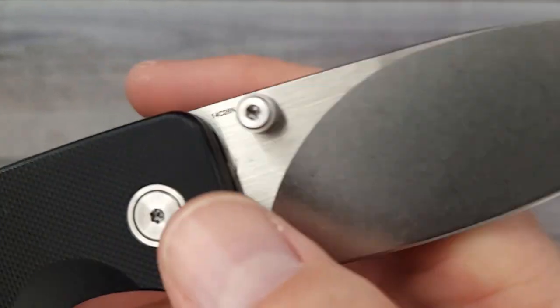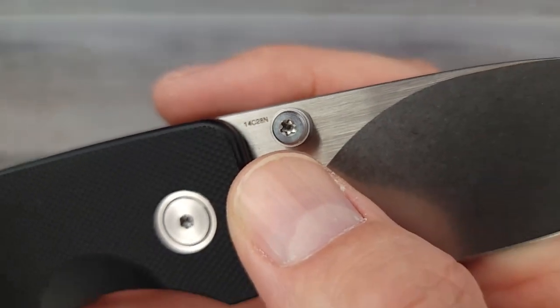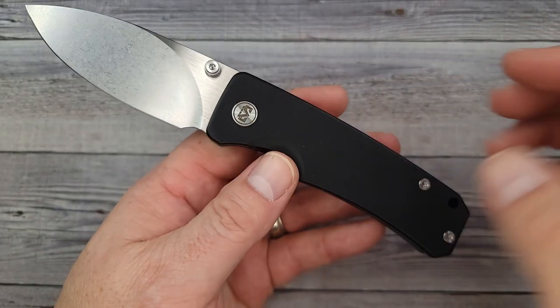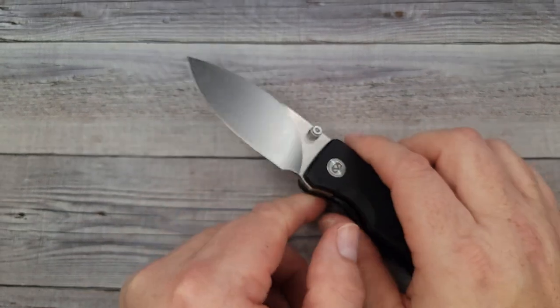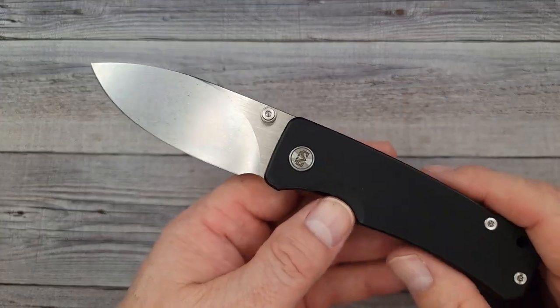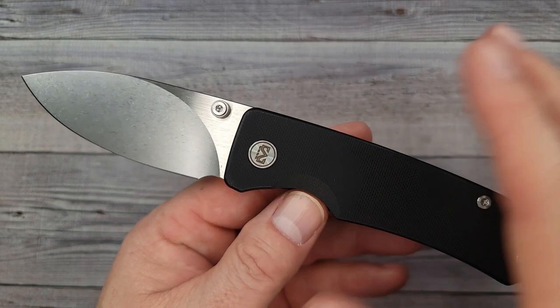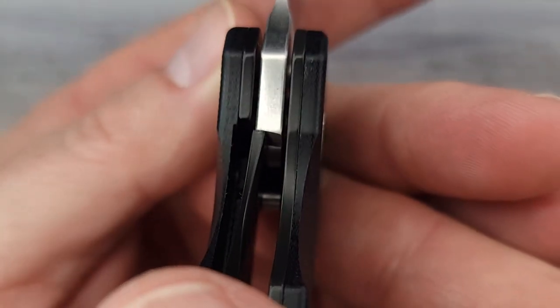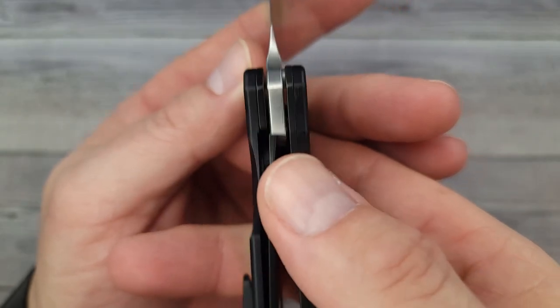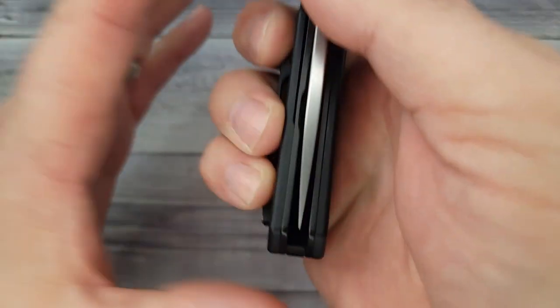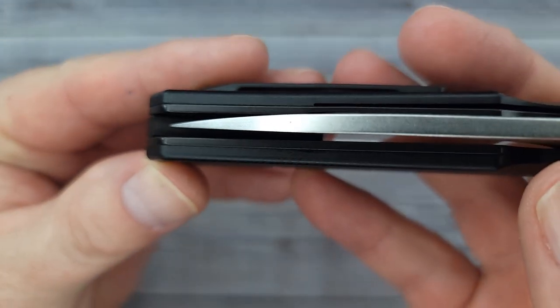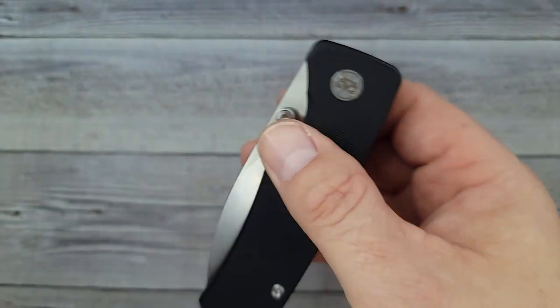I have to say I'm impressed they're putting out 14C28N blades for less than 50 bucks. Your lockup is good, you're just about in the center, about 40 to 50 percent. The blade is centered, and look at that - it is chunky. I mean this is not going to mess around.